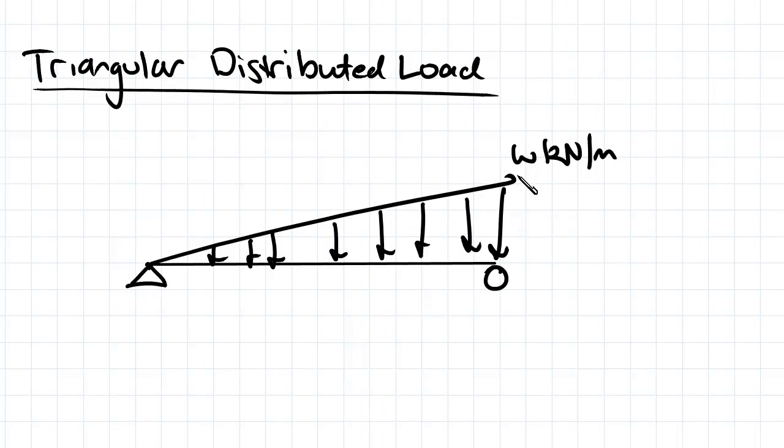So you should remember from the UDL, that had an equivalent point load of WL. And since you might know from your high school maths that a triangle is half the area of a rectangle, the equivalent point load for a triangle is going to be half of that WL, so WL over 2.